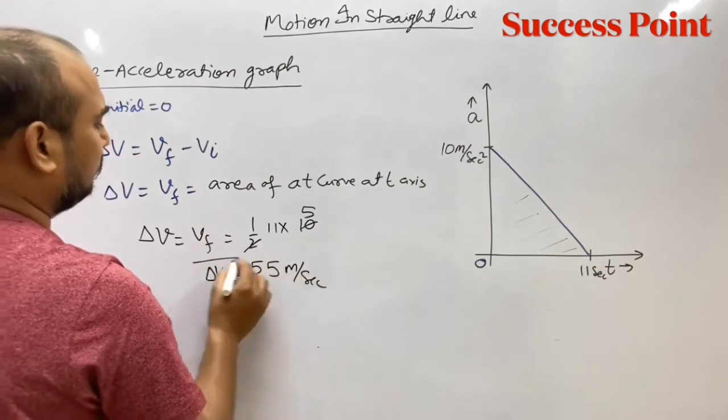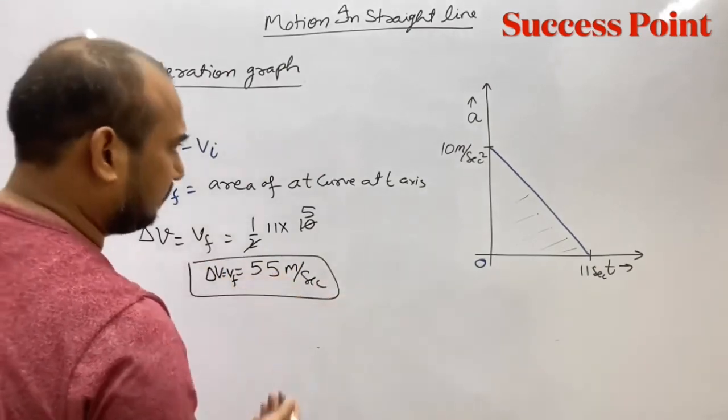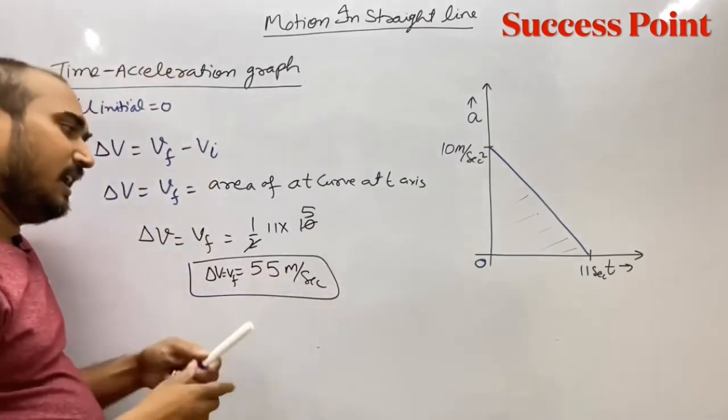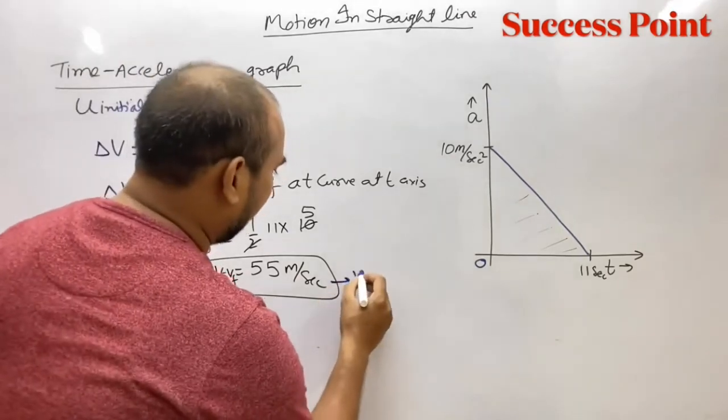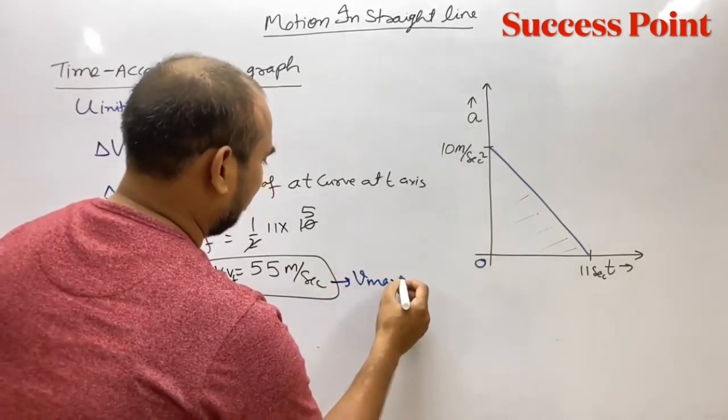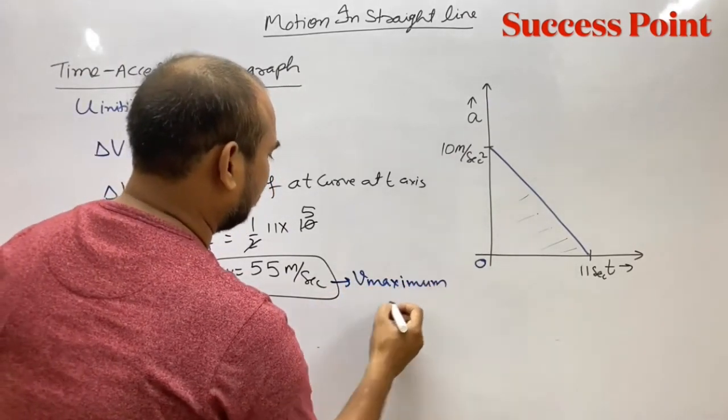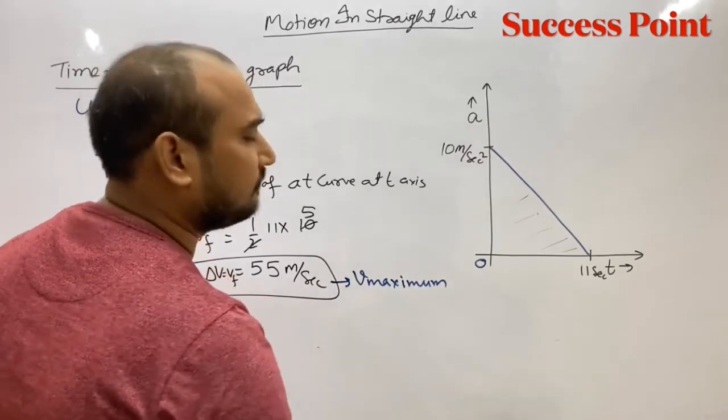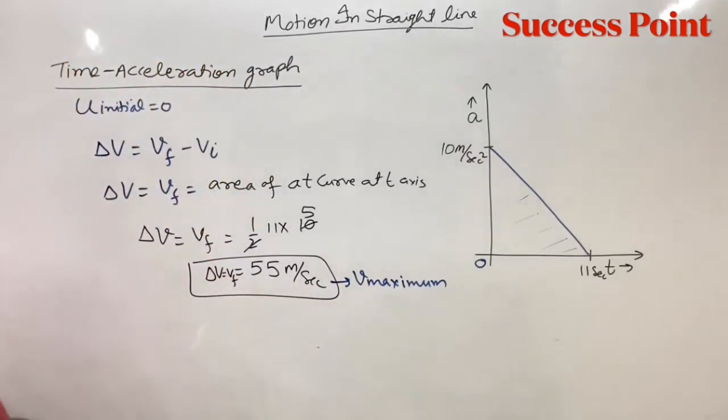So the final velocity will be 55 m/s, and this will be the maximum velocity. This will be the maximum velocity for this body. Okay, note this.